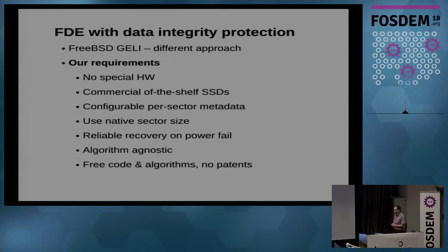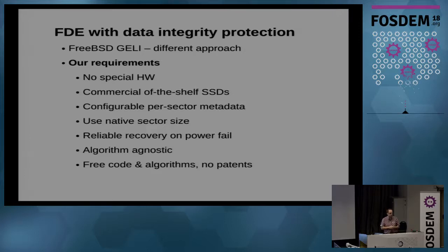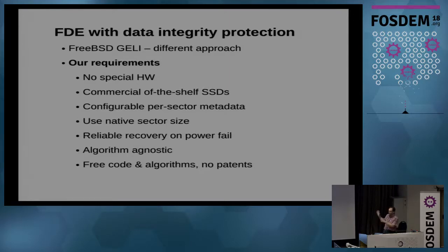Before describing our implementation, here are the requirements defined upfront. There's a FreeBSD solution for encryption combined with data integrity protection, but it's limited to certain sector sizes and algorithms, and it increases sector size beyond page size — so we don't use it. Our solution should require no special hardware, use commercial off-the-shelf disks with focus on SSD (rotational drives work but with worse performance), support configurable per-sector metadata — so we can add integrity checksums, authentication tags, or even forward error correction — and keep the native sector size the same throughout the storage stack.